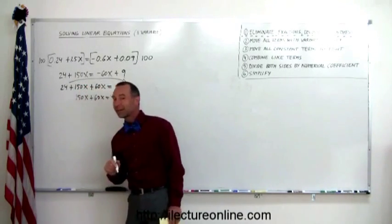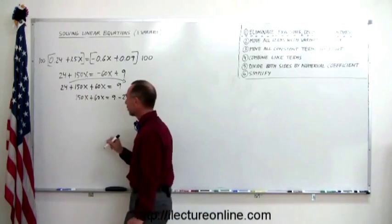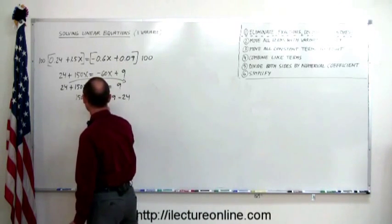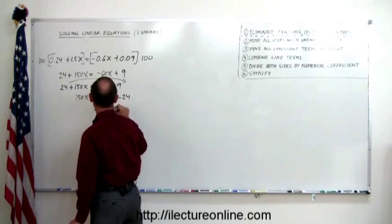Remember, when you cross equal sign, change that sign. Now we can combine like terms on both sides. So 150 plus 60 is 210x equals 9 minus 24 is minus 15.